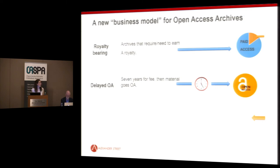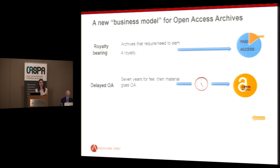We also came up with a delayed model, or hybrid model. In this model, the content is available in a subscription model for a period of time — usually about seven years — but then after that point, after we've recouped the cost of digitizing and channeled some royalties back, we flip the content. There's been a lot of talk about flipping journals — I think there's a parallel here in terms of flipping archival content. We flip the content and make it freely available.